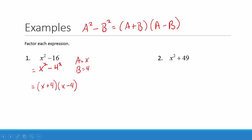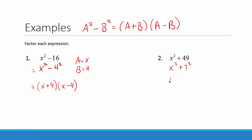In our next example, we have x squared plus 49, which is 7 squared. Notice this is a sum of two squares, not a difference of two squares, and we cannot factor this. So this polynomial is prime.